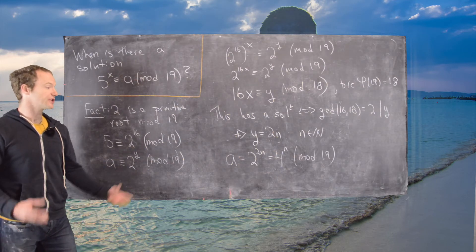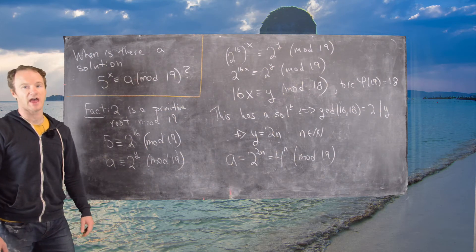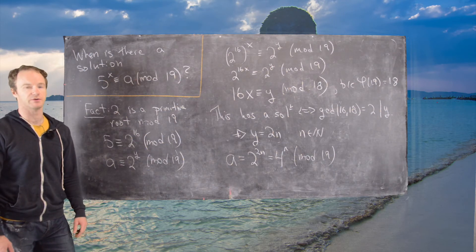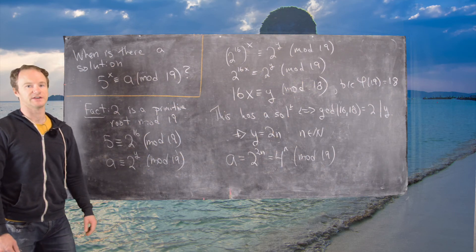So now from here, you could calculate exactly which values of a you have just by letting n vary along the natural numbers until you get repetition. But I won't do that, I'll leave this here.